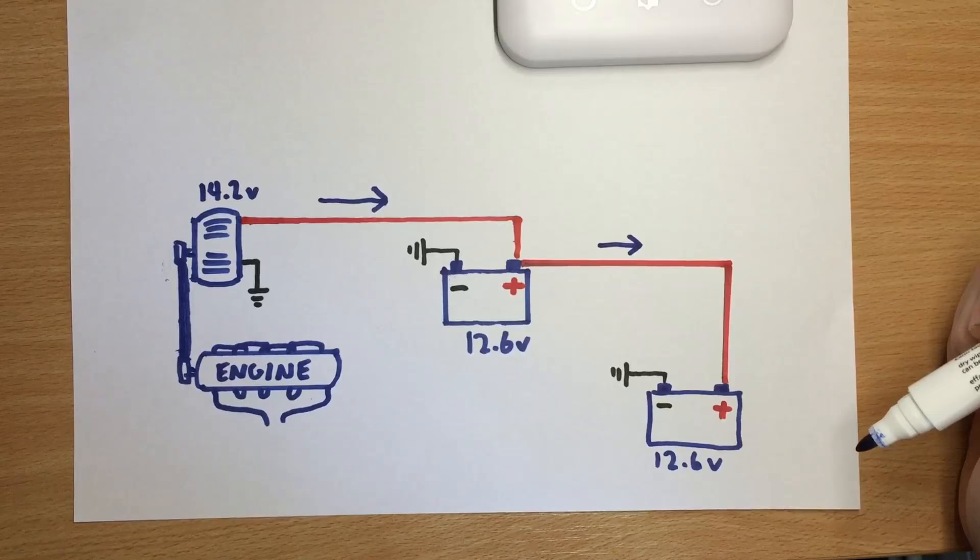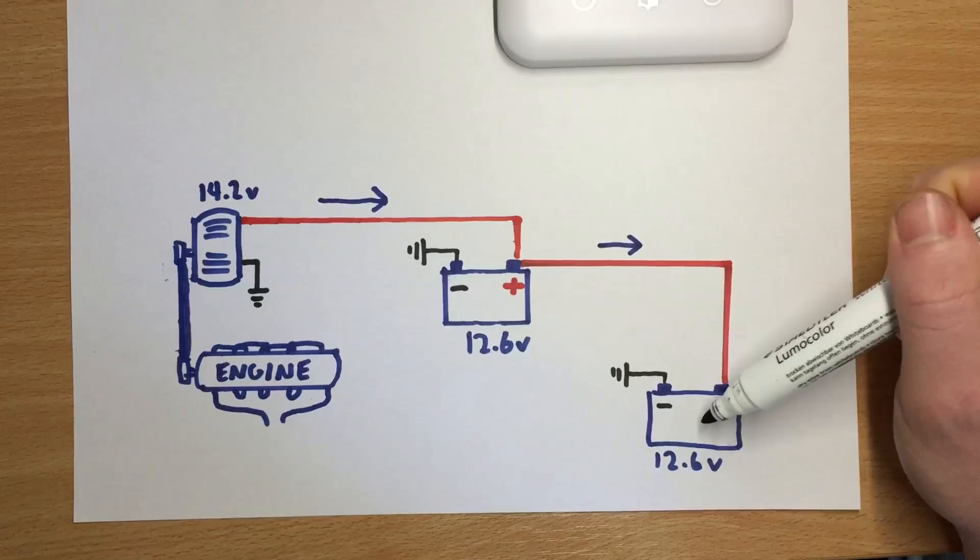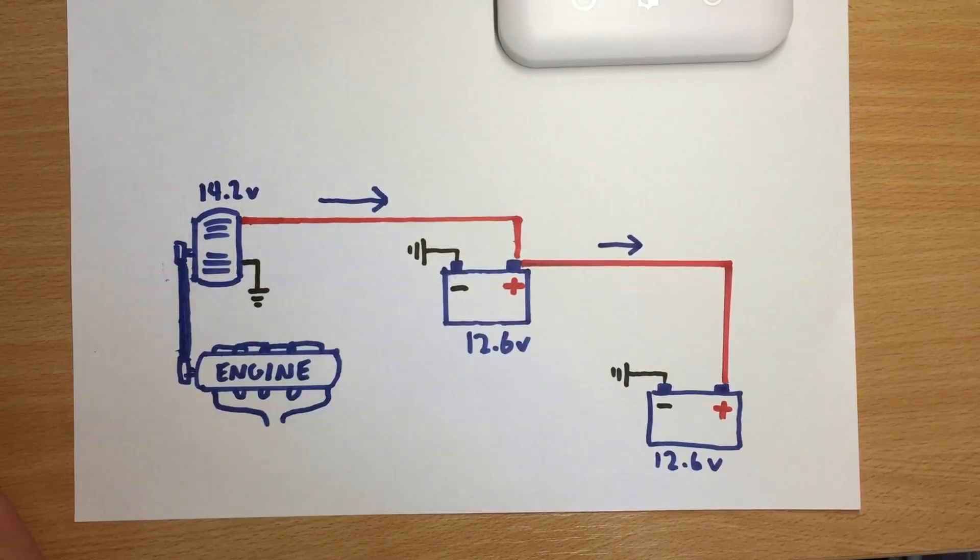Now obviously this isn't an ideal setup because what we want to do is we want to use this leisure battery at our leisure when the engine's not running without using this battery. So we want something that separates these two batteries when the engine's not running but connects them both when the engine is running, hence so that they're both being charged.